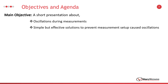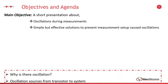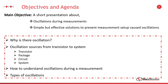Oscillation in electrical circuits and systems is a wide topic. In this presentation, I will focus on measurement setup related oscillations and talk about some simple but effective methods to prevent oscillations caused by measurement setup issues. I will start by explaining the main source of an oscillation. After that, I will show some examples as oscillation sources from transistor level to complete system. It will be followed by a slide explaining how to understand an oscillation during a measurement session. I will finalize with some recommendations to improve stability of your measurement setup.